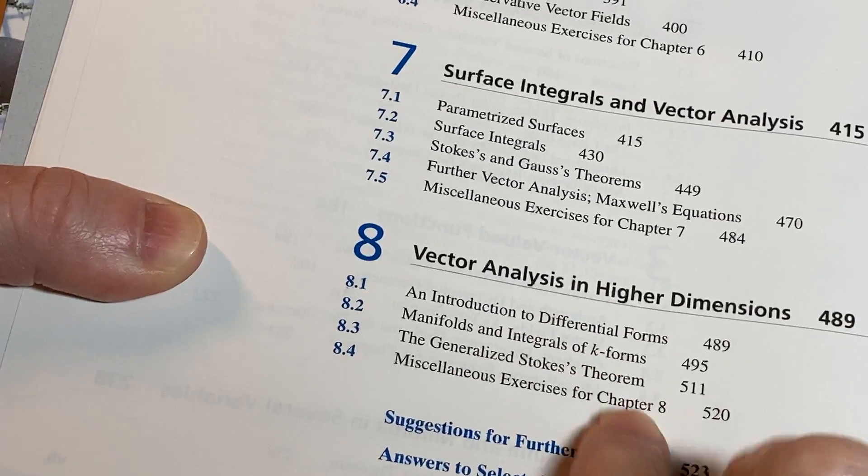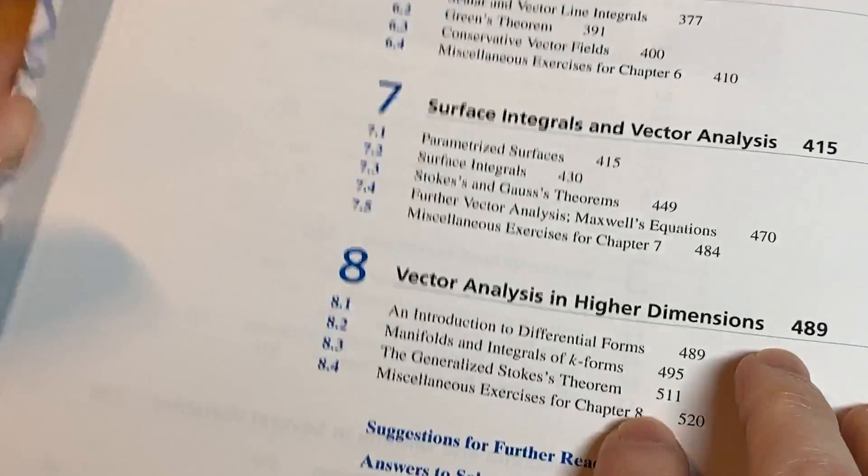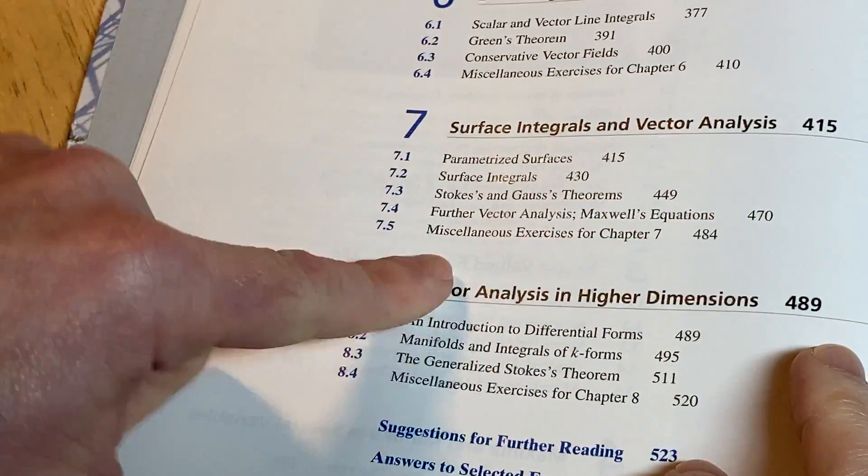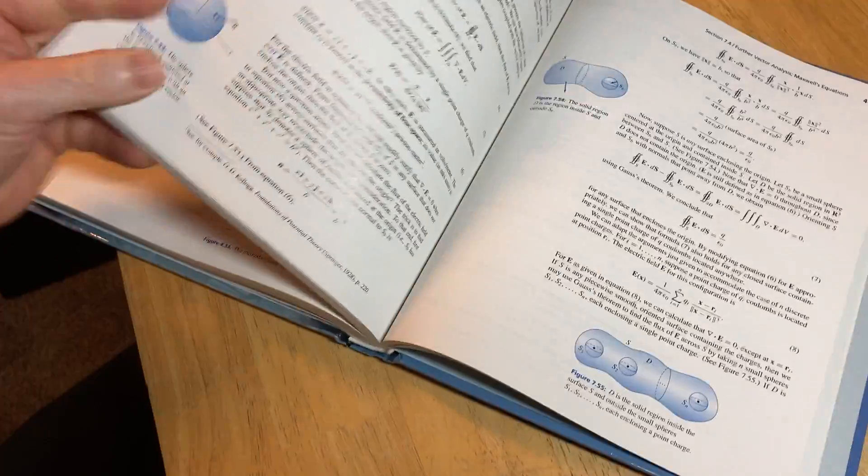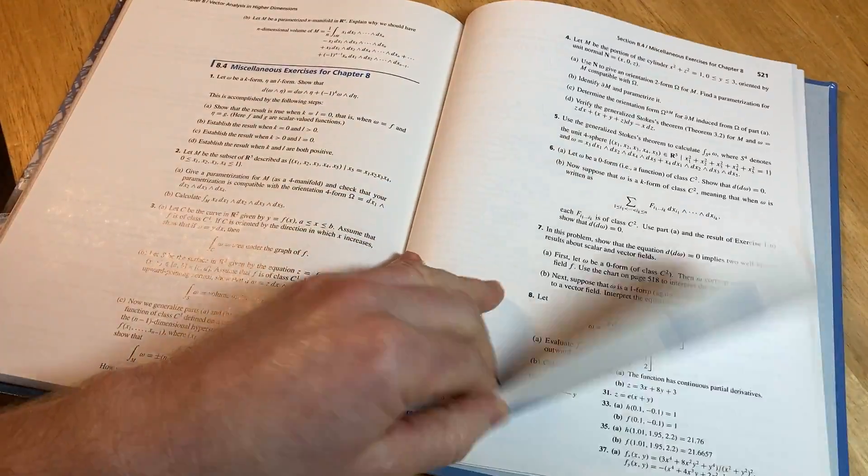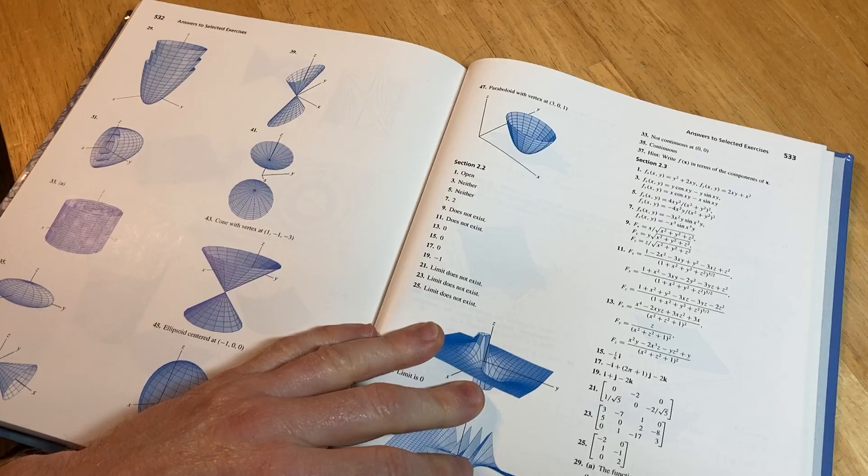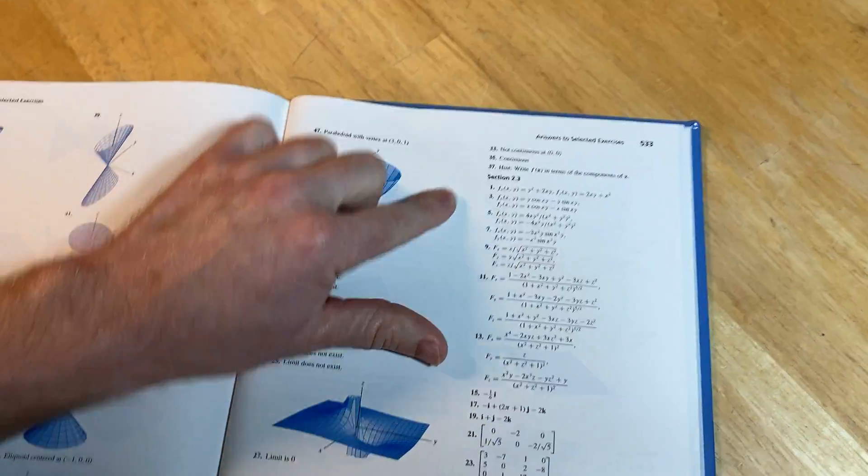So something that you typically don't find in Calc 3 books. So like if you get the book by James Stewart or Larson, it's not going to have this stuff here. It says answers to selected exercises. And I've looked at this book and I've done some of the problems and I've read some of the latter sections, in particular the section on Stokes theorem. And it seems that it has answers to all of the odd numbered ones, or at least most of them. But it does say selected, so I'm assuming there's some that are missing.